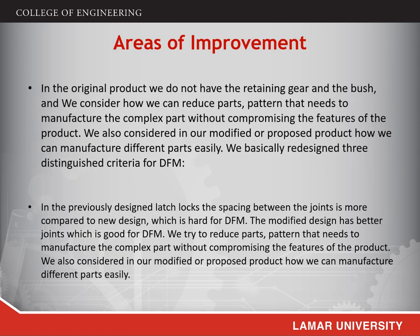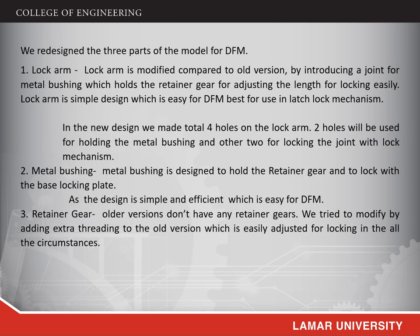Areas of improvement: In the original product, we don't have the retaining gear and the bush. We considered how to reduce the parts count needed to manufacture complex parts without compromising product features, and how to manufacture different parts more easily. We basically redesigned three distinct criteria for design for manufacturing. The spacing between joints in the previously designed latch lock is greater compared to the new one, which is difficult for DFM. The modified design has better joints, which is good for design for manufacturing. We redesigned three parts for the model.